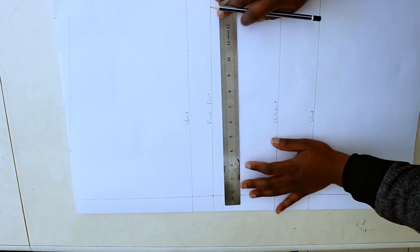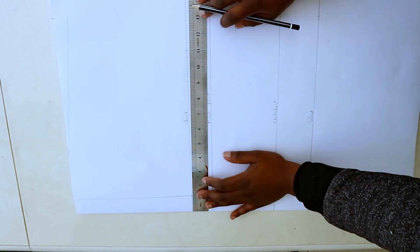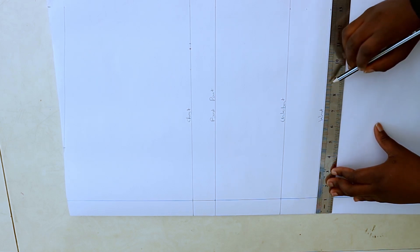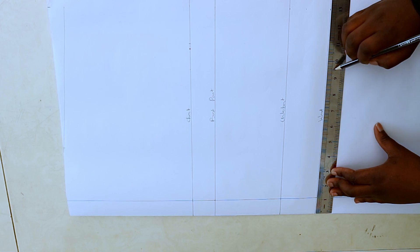Next, mark the bust point measurement, the under bust length, and the front waistline. Mark this on the other side as well and square across each line. On the chest line, mark a quarter of the bust circumference plus 1 inch for seam allowance.